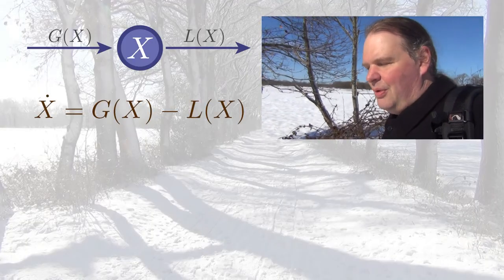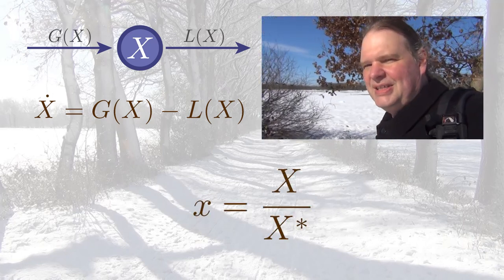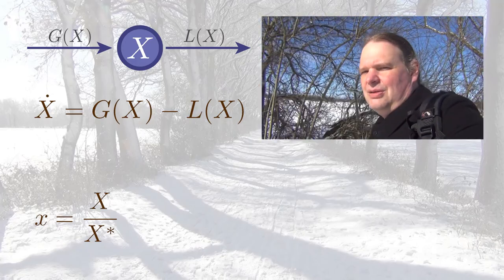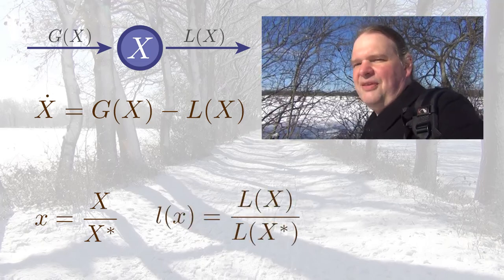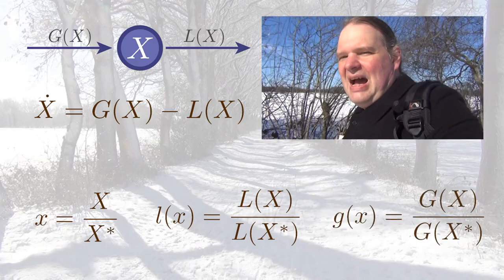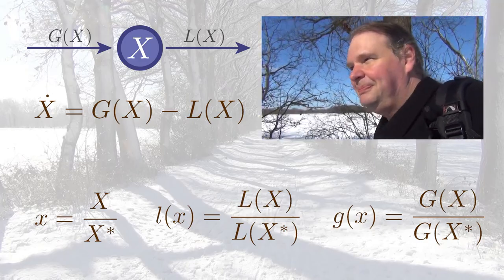So how do we do this? We define a new variable, which we call small x, that is the old x divided by the unknown steady state value x*. Can I actually divide something by a number I don't know? Sure — mathematically I can totally do this. While we are on it, let's also define rescaled functions. I want to define a new loss function, small l, and a new gain function, small g, by taking the old functions and dividing them by their steady state values — which we can write as g* and l*.